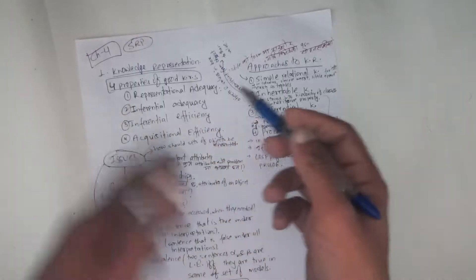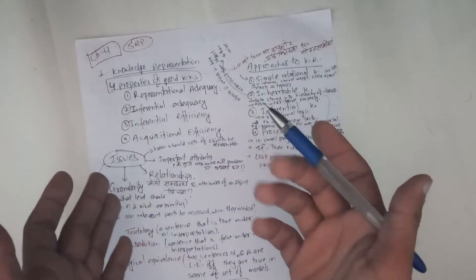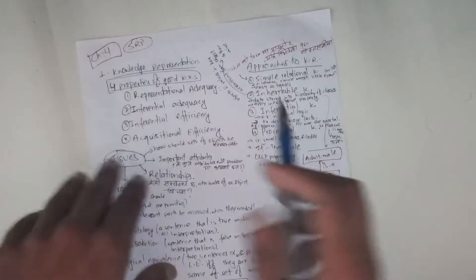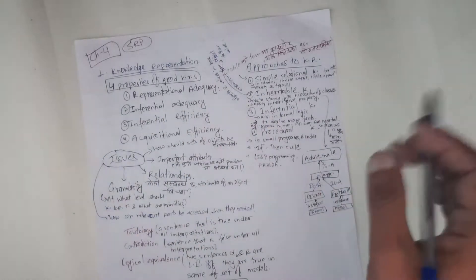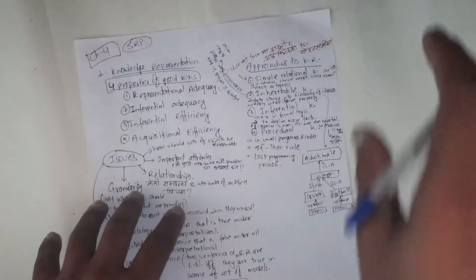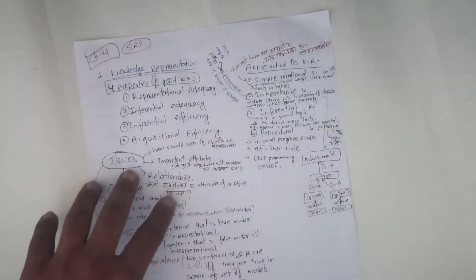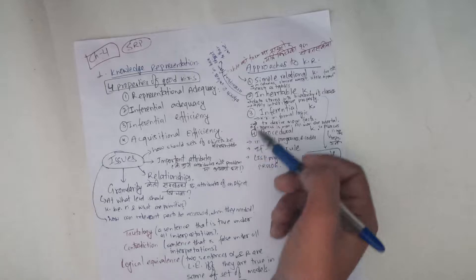Knowledge Representation is a good knowledge representation system. What is it? Representational adequacy - I am going to tell you about the domain, and the inferential adequacy.